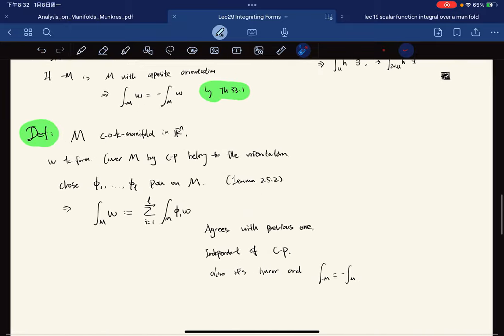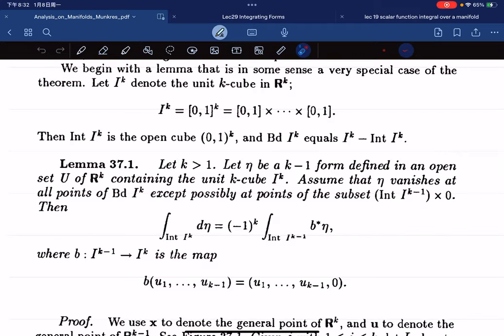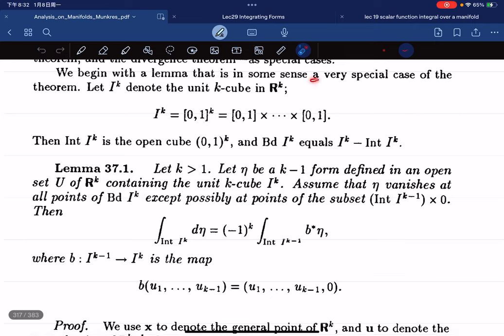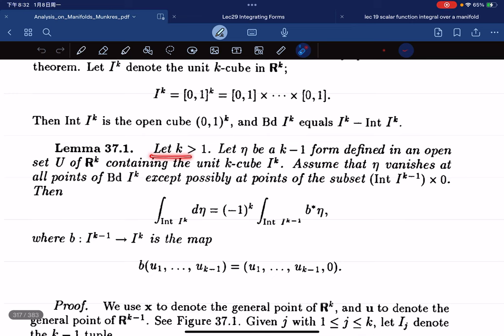Now I have Theorem 33.1. Let I^k equal to this, so the interior is the open cube and the boundary equals to this. The statement is kind of long. K is greater than 1 first, so there's a k-1 form defined on the open set U of R^k containing the unit k-cube. It contains the unit k-cube and assume it vanishes at all points on the boundaries, which is this set minus the interior—like the faces. It vanishes at all points on this but possibly at points of the subset.